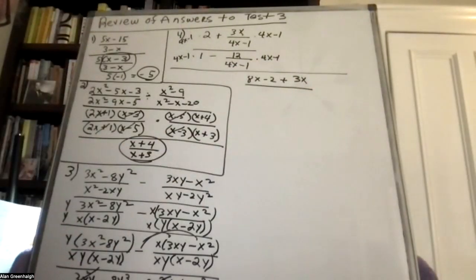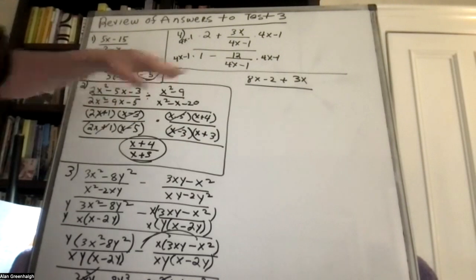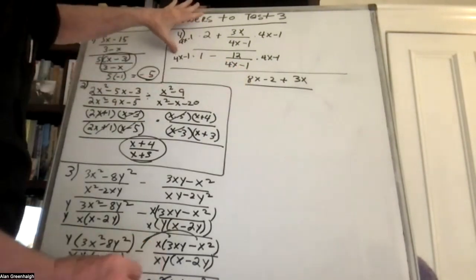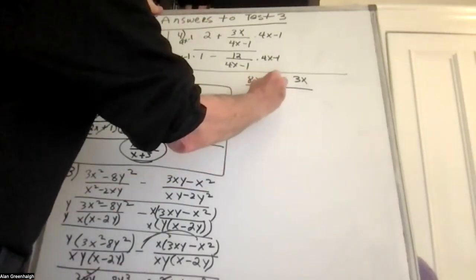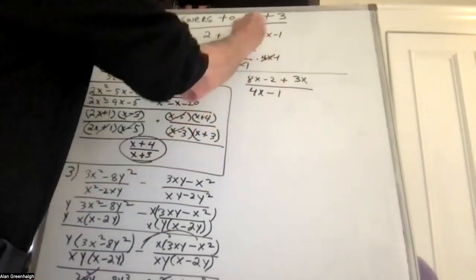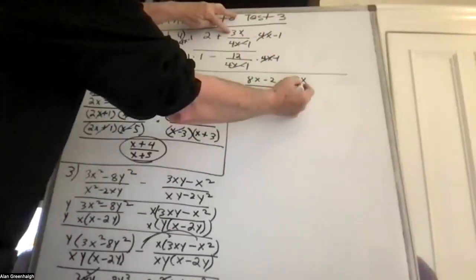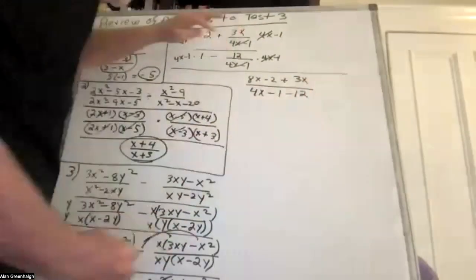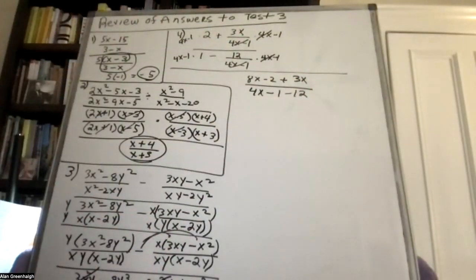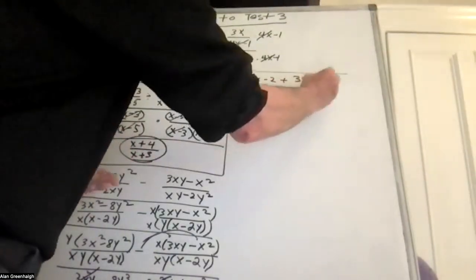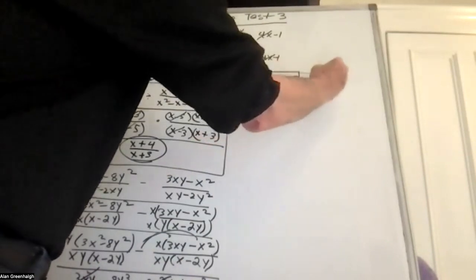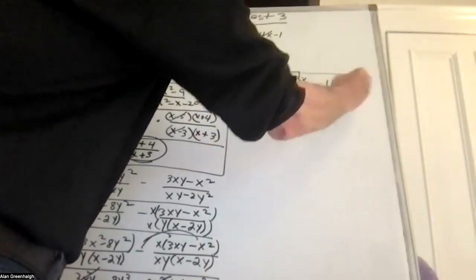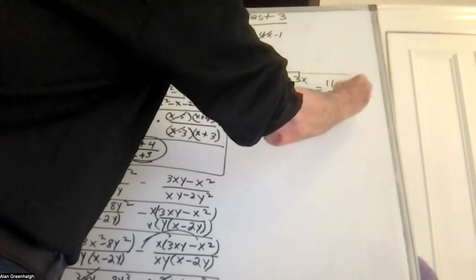That gives us 2 times 4x minus 1, which is 8x minus 2, plus 3x. The denominator is 4x minus 1. Then this cancels out with that, giving 3x. This cancels out with that, giving negative 12. Simplifying: 8x plus 3x is 11x minus 2, divided by 4x minus 13.